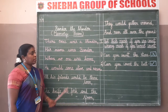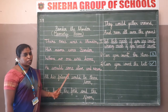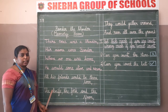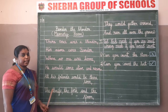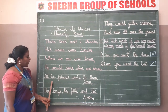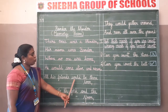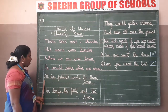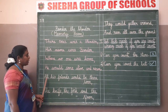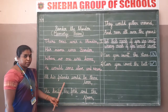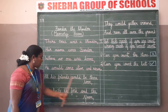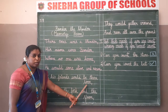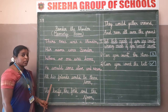Now we are going to write the next stanza - the second stanza. Start with a capital letter, leave finger space, and end with a comma: 'All his friends would be there soon', comma. Again you have to leave your line and start writing from the next line.